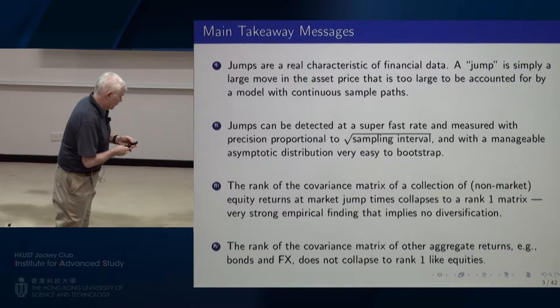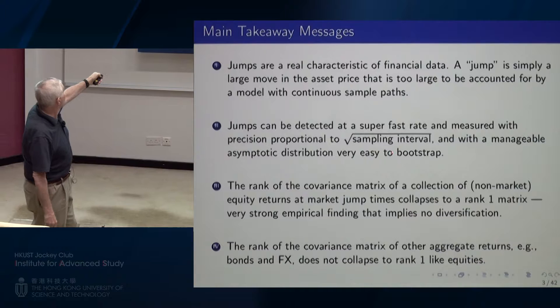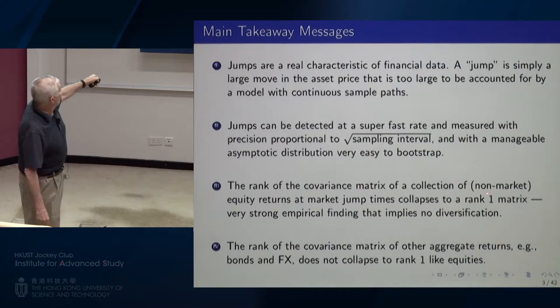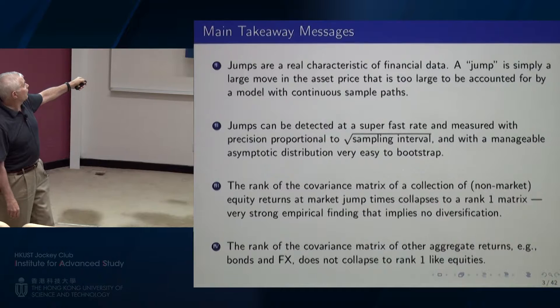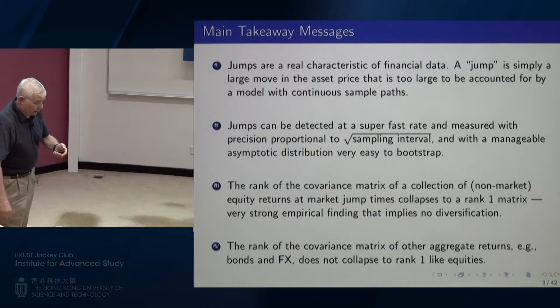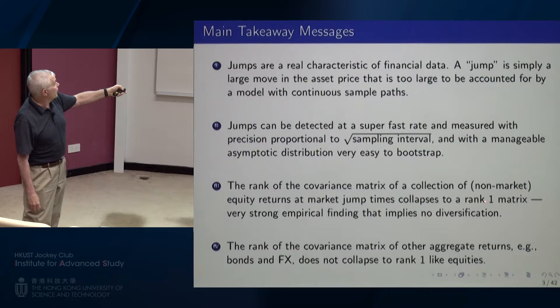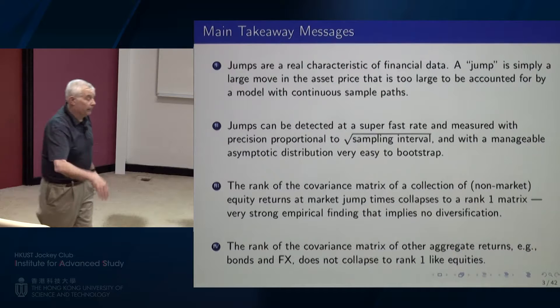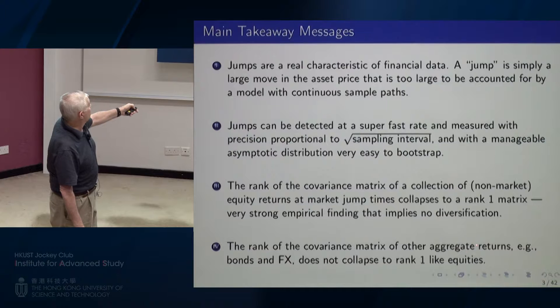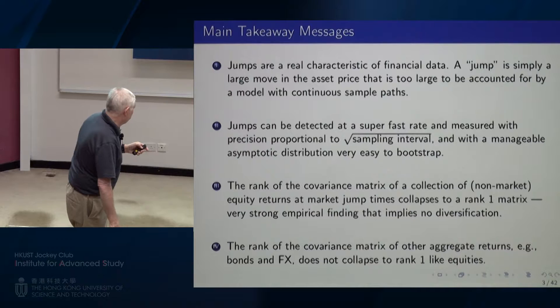Jumps can be observed and measured. What the paper is really about is the covariance matrix of a collection of equity returns — here we use the Dow 30, but we have in mind larger collections such as the S&P 100 or S&P 500. We'll talk about the way that the rank of the returns variance matrix collapses to a rank 1 matrix. That's the main empirical finding. Also, the rank of the covariance matrix of other aggregate returns like bonds and foreign currency does not collapse in that manner.